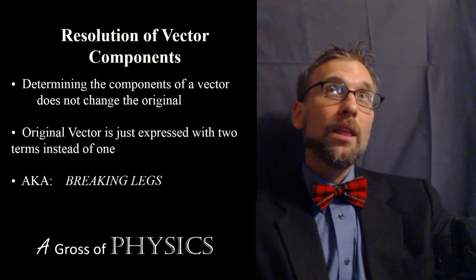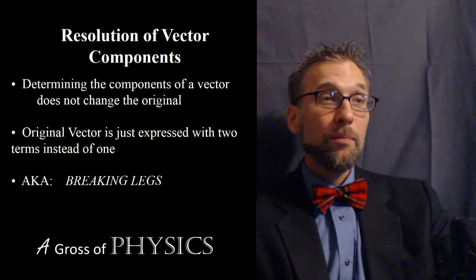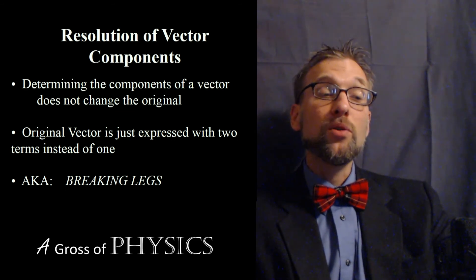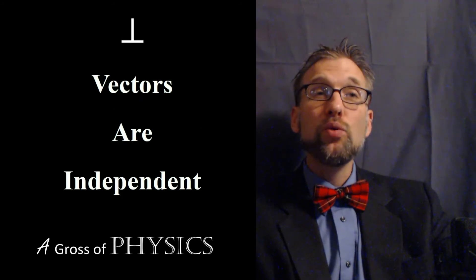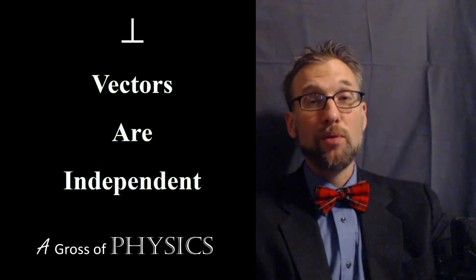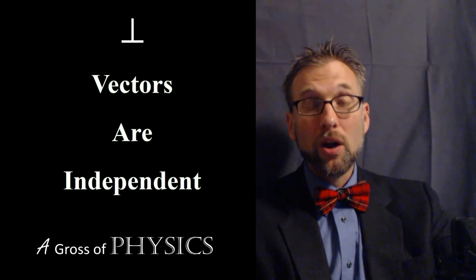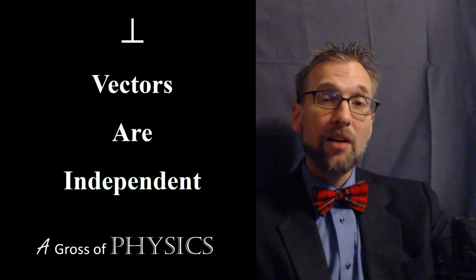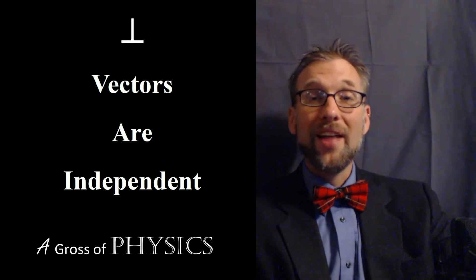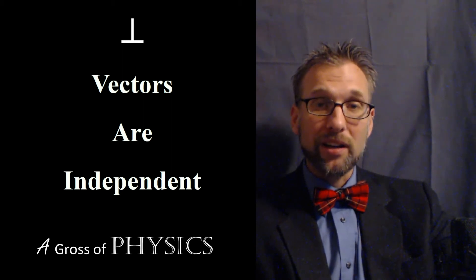Today we discussed breaking vectors into their components — breaking legs. We discussed putting them back together because we still have the same original vector. And we discussed the most important thing about today's lecture: perpendicular vectors are independent. If we have two sets of vectors 90 degrees apart, we can treat them as two separate problems. With x and y being horizontal and vertical — perpendicular by default — we can calculate any two-dimensional projectile motion problem. That's going to allow us to solve problems that, at first glance, seem way more advanced than we can handle. But you already have the tools. It's not magic — it's just physics.